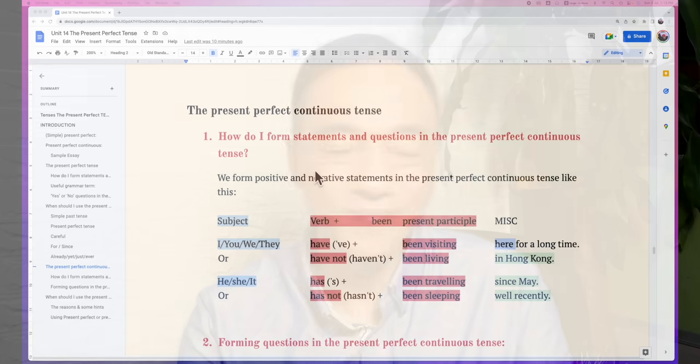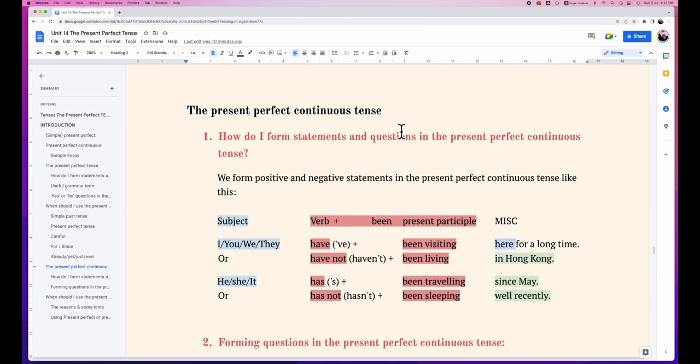Let's take a look. What is present perfect continuous? Present perfect continuous tense - you can see a sentence having have plus been, a past participle of verb to be, and an -ing form, the present participle. So how do people form statements and questions in present perfect continuous tense?